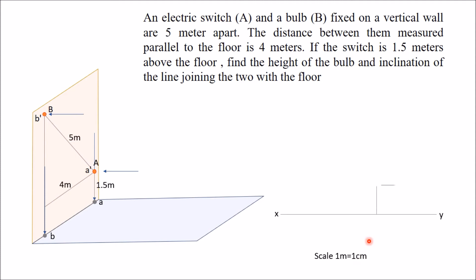Draw a vertical line in the XY line at a distance of 1.5 meters. Mark point A dash, which is 1.5 meters from the XY line. You can draw this vertical line anywhere on this XY line. After this, draw a vertical line which is at a distance of 4 meters from this vertical line. That means projectors are at a distance of 4 meters. Now front view and top view of bulb B will appear here on this vertical line only.